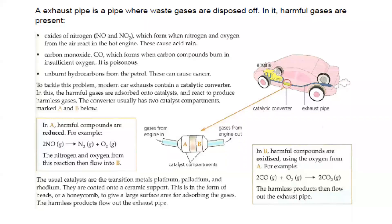Petrol is used as a fuel inside the car. Petrol is a hydrocarbon, meaning it contains hydrogen and carbon. Whenever we burn petrol, the hydrocarbon is burnt — a complete combustion of a hydrocarbon in the presence of oxygen produces carbon dioxide and water vapors.